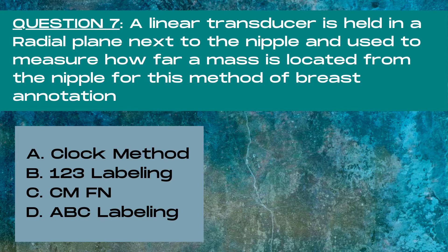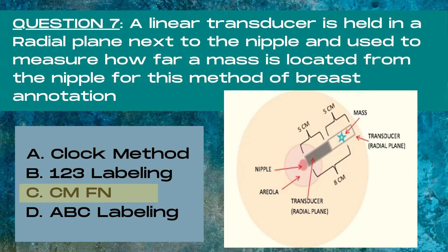Question 7. A linear transducer is held in a radial plane next to the nipple and used to measure how far a mass is located from the nipple. For this method of breast annotation — A clock method, B 123 labeling, C centimeters from nipple, or D ABC labeling — the answer is C, centimeters from nipple. For this method, a linear transducer is used as a ruler. Standard linear transducers are 5 centimeters across lengthwise on the top of the transducer, and 1 centimeter increments are used to measure the distance of the mass from the nipple. This is delineated as CMFN, standing for centimeters from nipple.